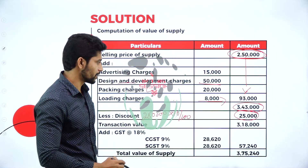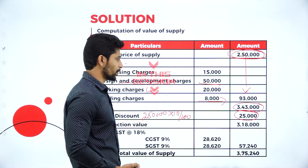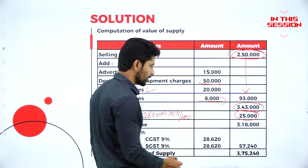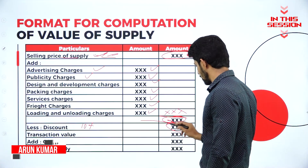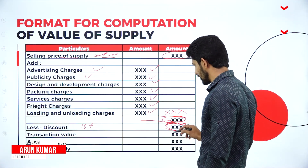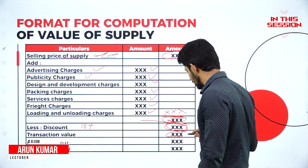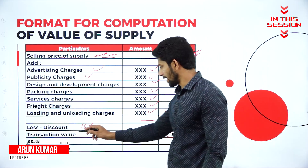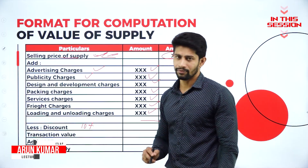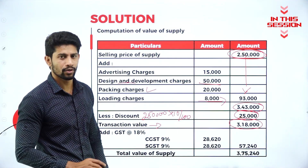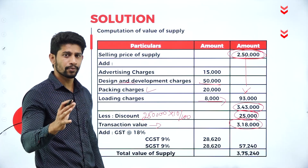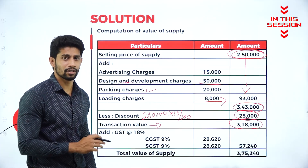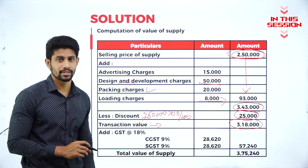From 3,43,000 deduct 25,000 you will get the balance of 3,18,000. Deduct the discount amount and you'll get the balance, which is called transaction value. For transaction value, you're supposed to add GST at the rate of 18 percent.